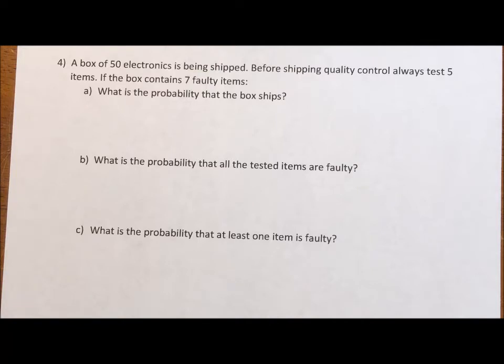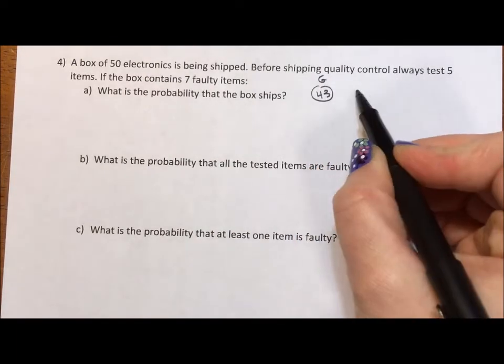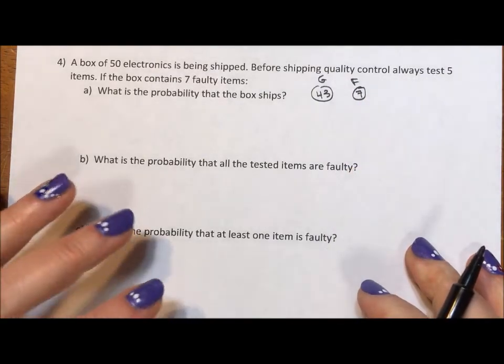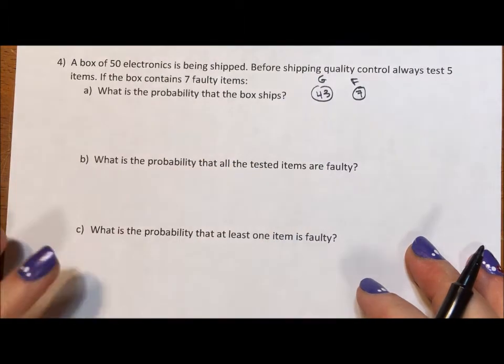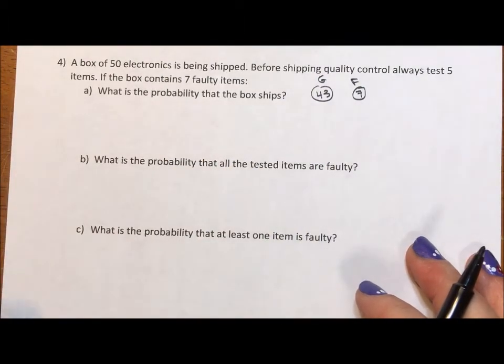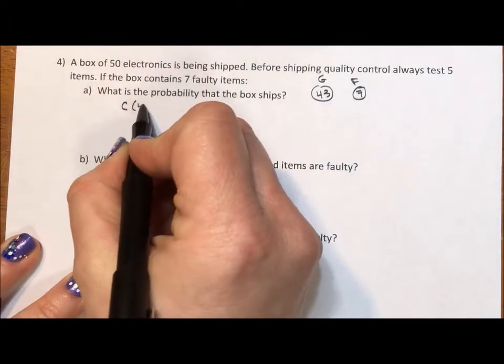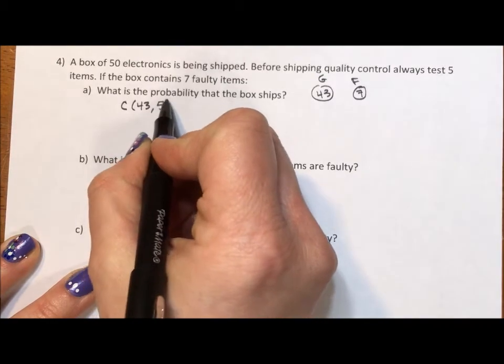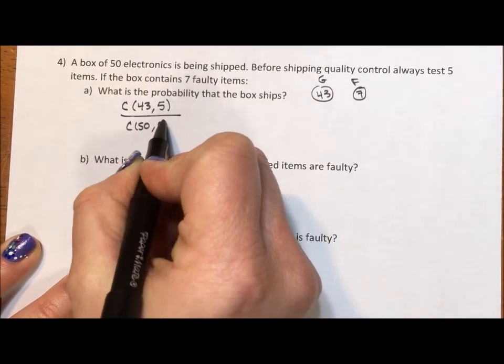So basically we have 43 good items and we have seven faulty items and we're basically saying what's the probability that everything that is tested comes from this group? Now it doesn't matter what order they're pulled out, we just care that it comes from that group. So we want the combination of the 43 good items taken five at a time divided by the combination of all 50 taken five at a time.